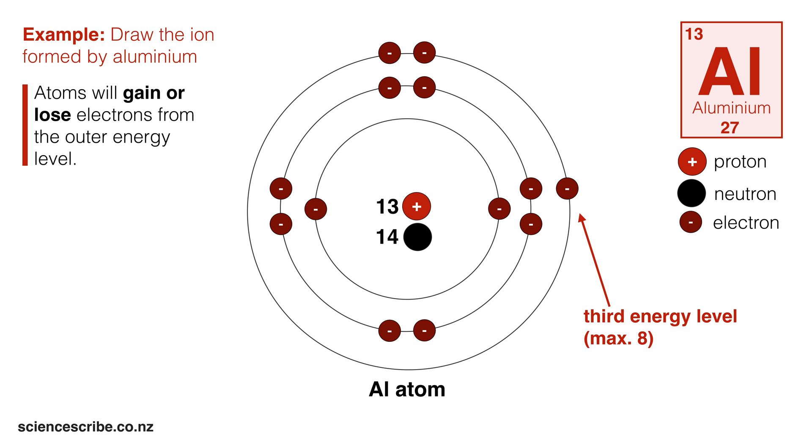In this case, my outermost energy level is the third energy level which can hold up to 8 electrons. Right now I've got 3. This means I could lose those 3 electrons or I could gain 5. It's going to be a lot easier to lose 3 than to gain 5 and that's what happens. Remember that whenever you gain or lose electrons, the resultant product will always be called an ion.